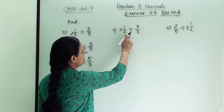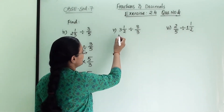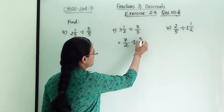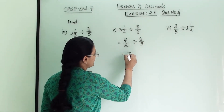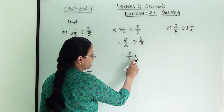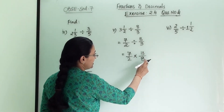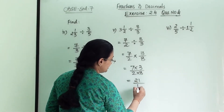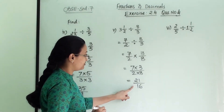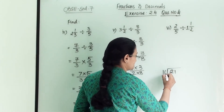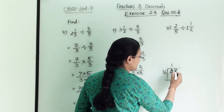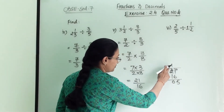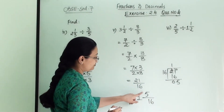The next numerical is 3 and 1 by 2 in division with 8 by 3. First, 3 into 2 is 6 plus 1 is 7, so it becomes 7 divided by 2 in division with 8 by 3. We write 7 by 2, convert division to multiplication, and take the reciprocal of 8 by 3, which is 3 by 8. So we get 7 into 3 divided by 2 into 8, giving 21 by 16. Converting to a mixed fraction: 16 ones are 16, remainder is 5, so the answer is 1 and 5 by 16.